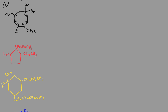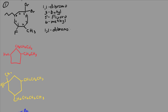So what I have is a 1,1-dibromo, and I have a 3-butyl, a 5-fluoro, and a 6-methyl. And again, we have a cyclooctane. So when I name this, I have to make sure that the substituents are in alphabetical order. So I'm going to start with the 1,1-dibromo, then the 3-butyl, 5-fluoro, and 6-methyl-cyclooctane.